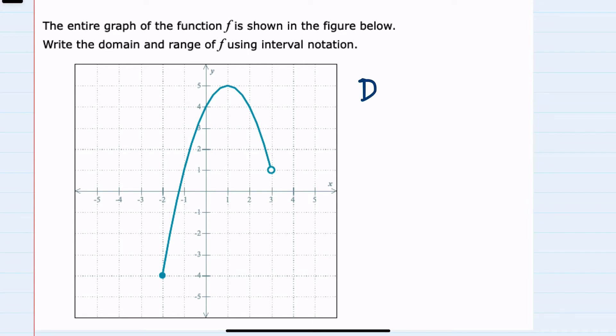For domain, I will recall that that's the possible x values in this function. Looking left to right, our x values go from here all the way out to here. Those x values are negative 2 on the lower side, and since it's a solid dot we're including negative 2.